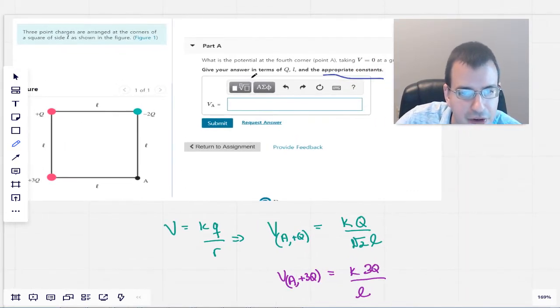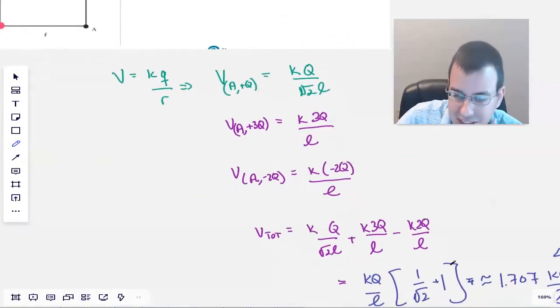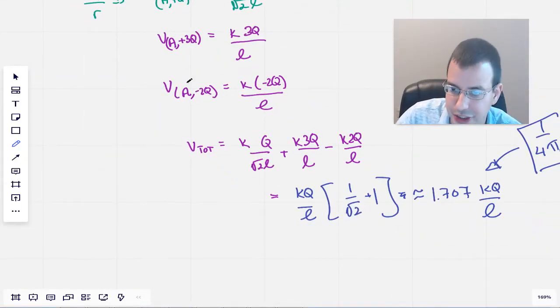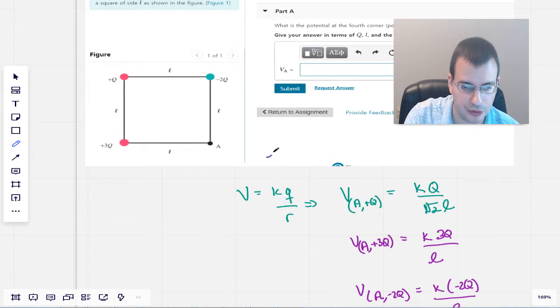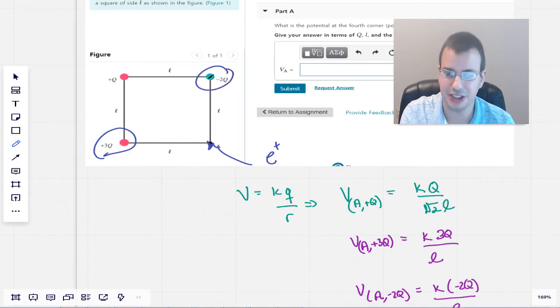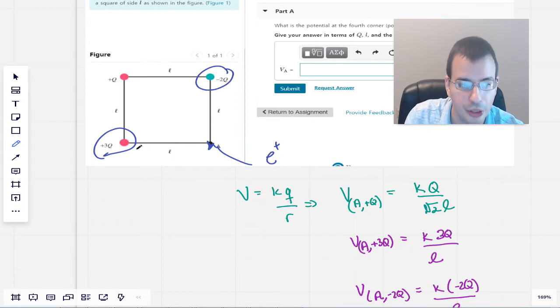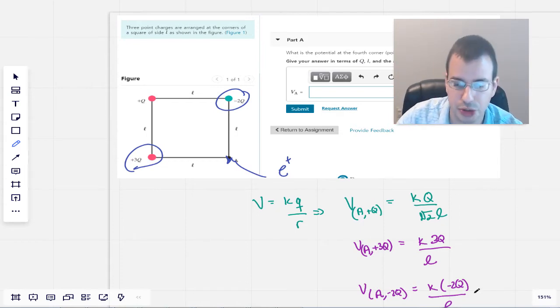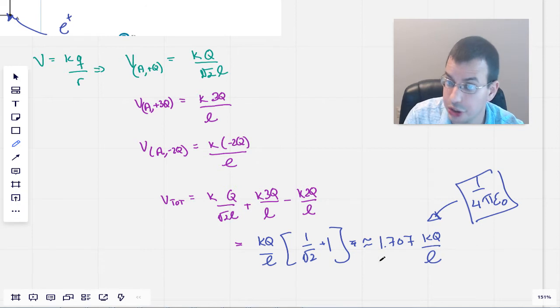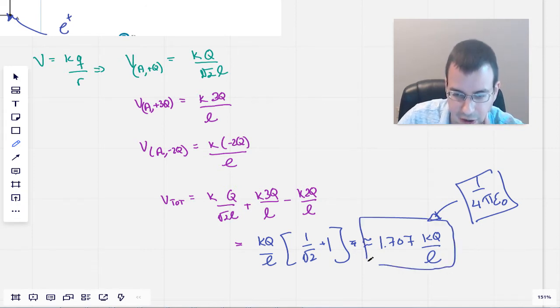So let's make sure we got this right. This gave us a positive value, assuming Q is positive. And so it means it's going to take work to move a positive test charge over to A. Which makes sense because we know that this plus 3Q is the same distance as negative 2Q. And since the 3 is bigger than 2, it's going to be a net positive force here. Which means it's going to be hard to bring a positive charge in. So we're expecting a positive potential, which we do.